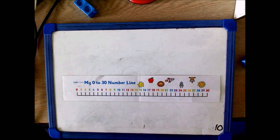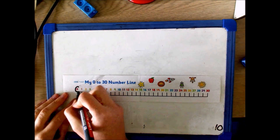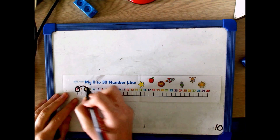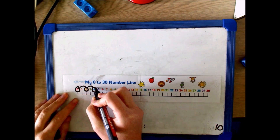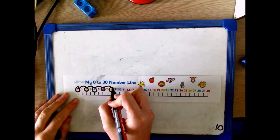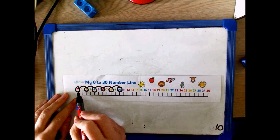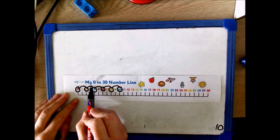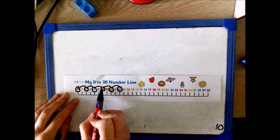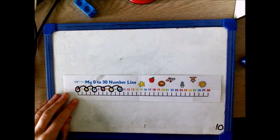Alternatively, this could be represented on the number line using jumps. Here I start at 0 and count in jumps of 2. This is the same as 2 add 2 add 2 add 2 add 2 — 5 groups of 2.